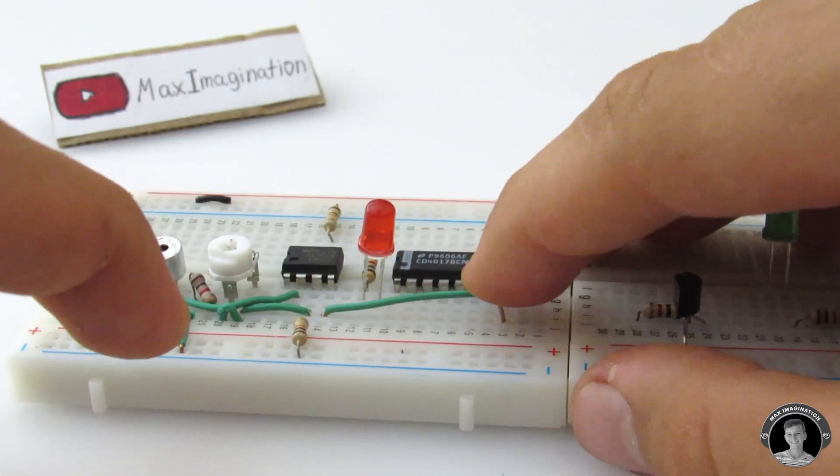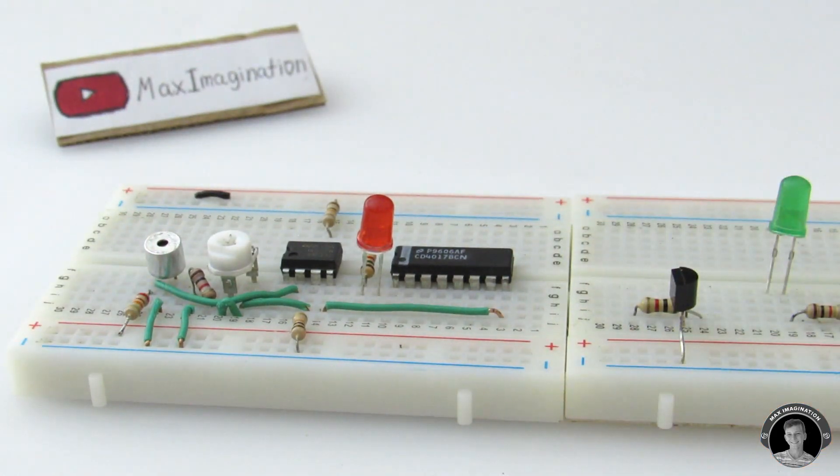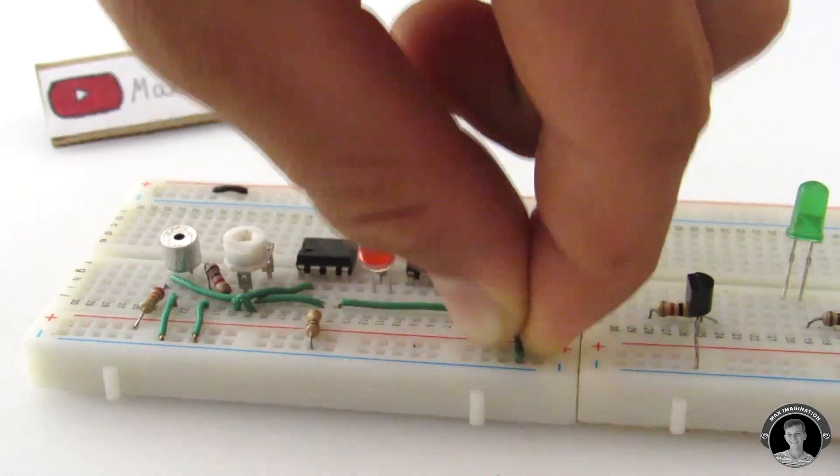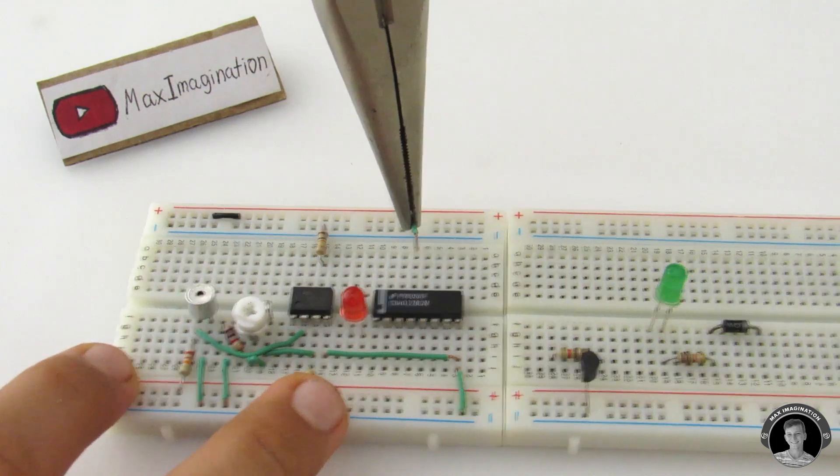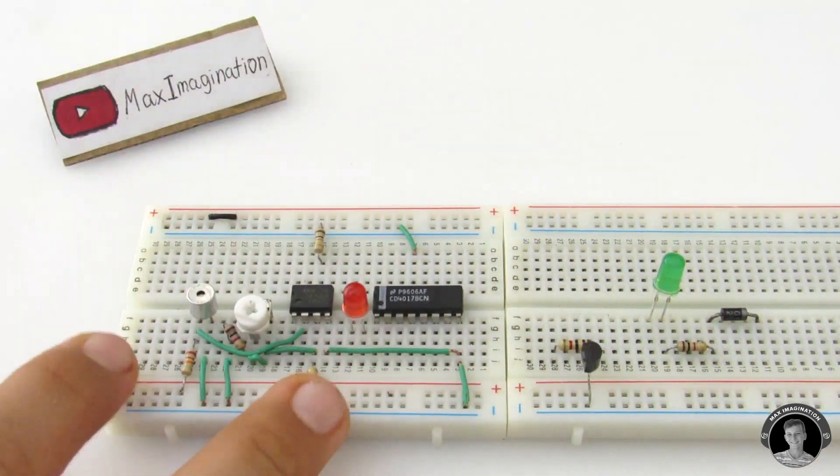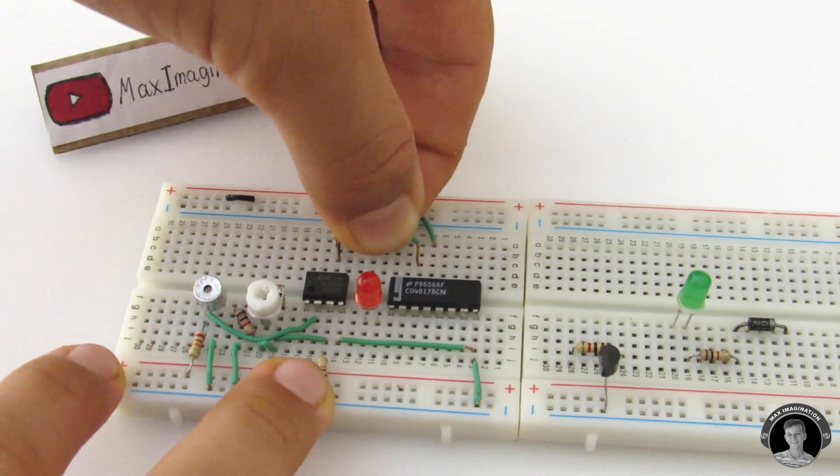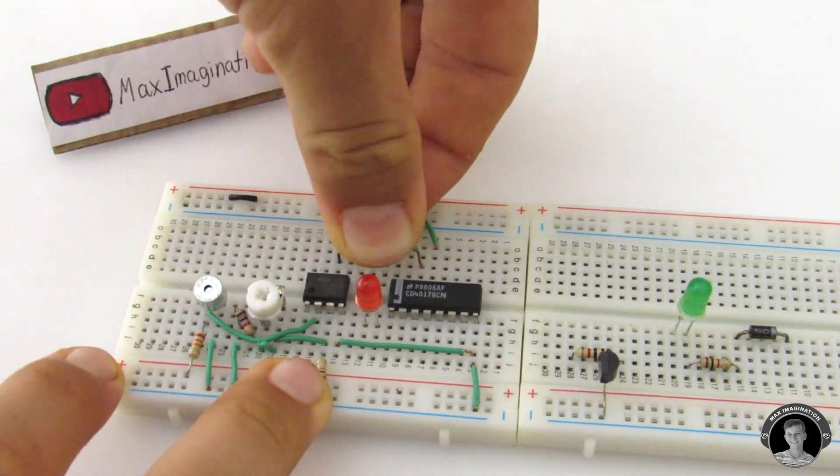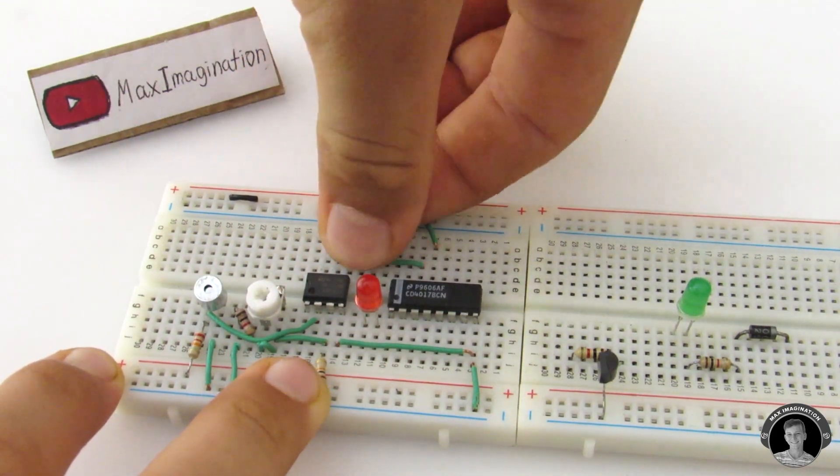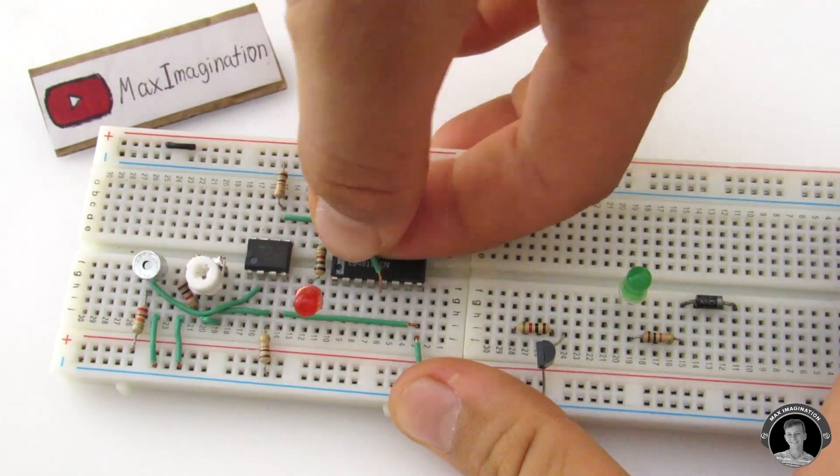Connect pin 4 of the 741 IC with pin 8 of the CD4017 and then connect it to ground. Pin 13 of the Decade counter goes to the upper ground rail. Pin 14 of the Decade counter connects with pin 6 of the op amp. On the Decade counter chip, connect pin 4 straight to pin 15.